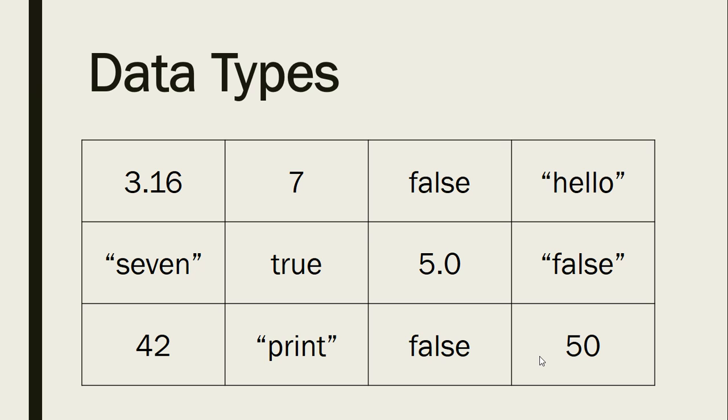True. True. If you said Boolean, that is correct. 5.0. That's a float.